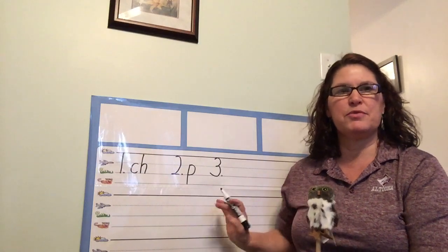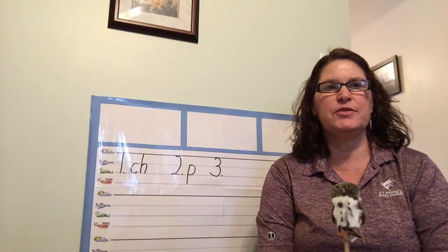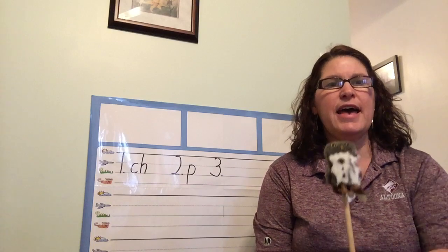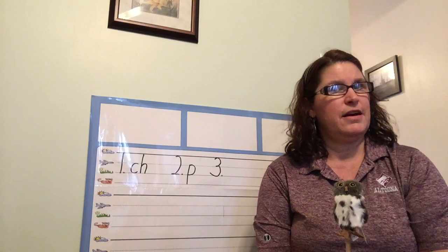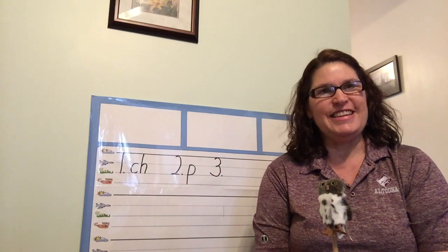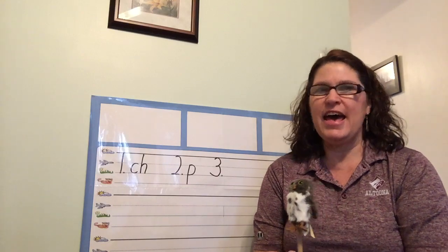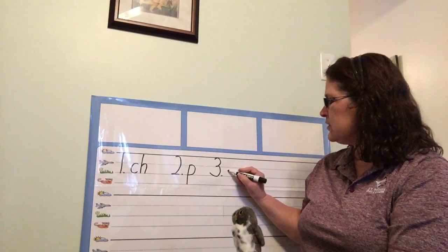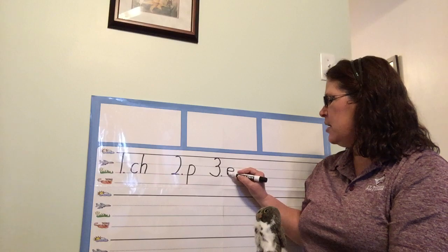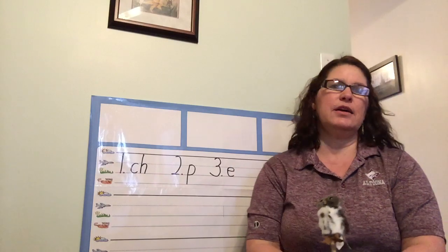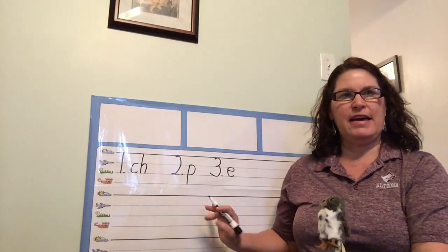Get ready. Here's number three. Last sound to review. Say eh. Eh. What says eh? You're right. E, ed, eh. Let's write E. Remember special letter E starts under the plain line, goes up to the plain line, and around to the grass line. E, ed, eh. Very good.